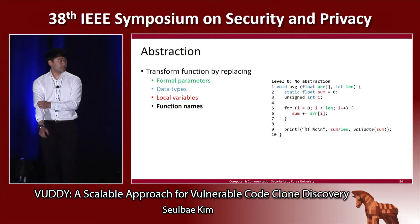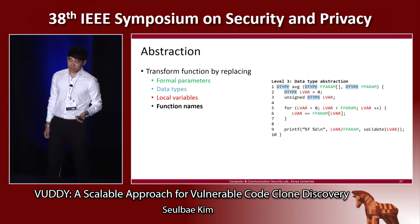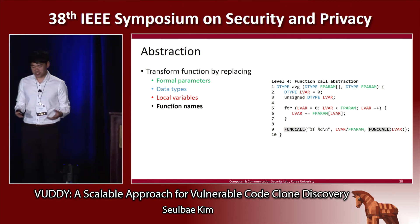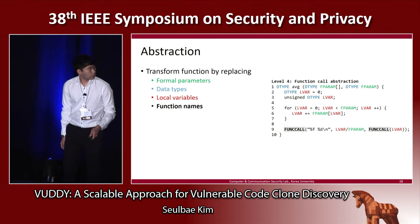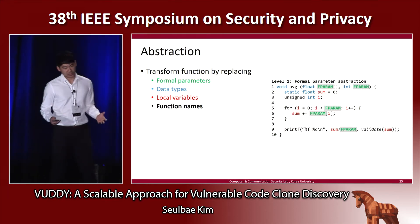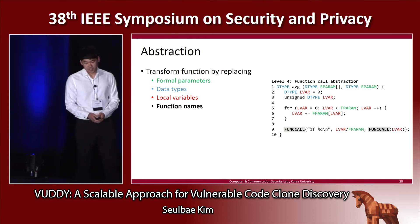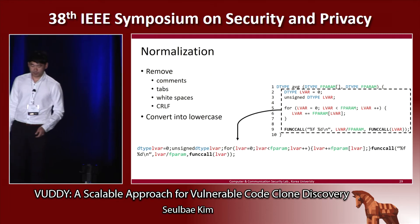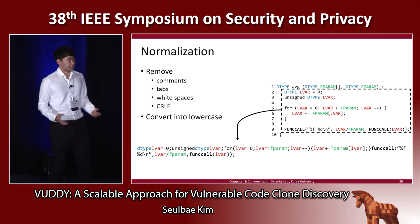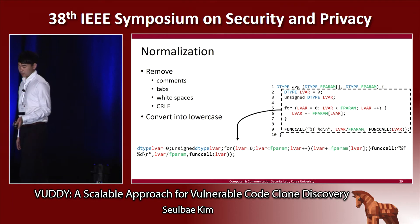Here's the explanation about abstraction and normalization. We apply abstraction and normalization because we want VODY to be resilient to common code modifications after code cloning, such as variable renaming or data type changes. We transform each function by replacing formal parameters, local variables, data types, and function names with distinct common identifiers. Then we remove every comment, tabs, whitespaces, carriage returns, and line feeds, and conduct a lowercase conversion, so that the result of abstraction and normalization becomes a normalized string.